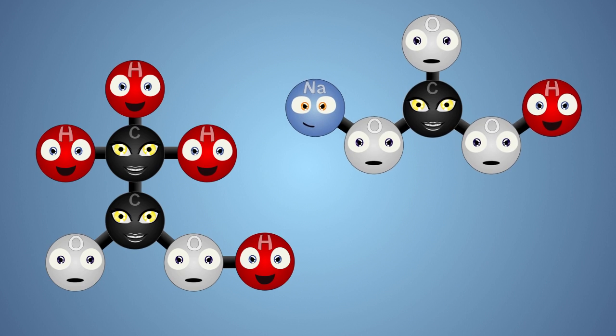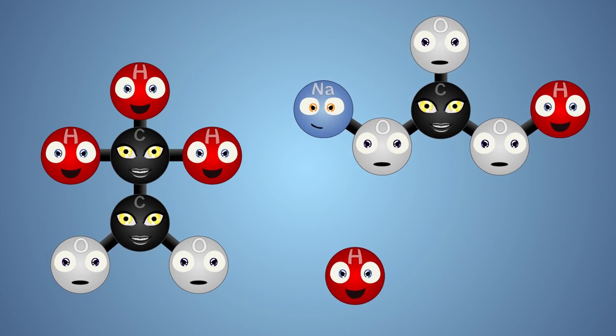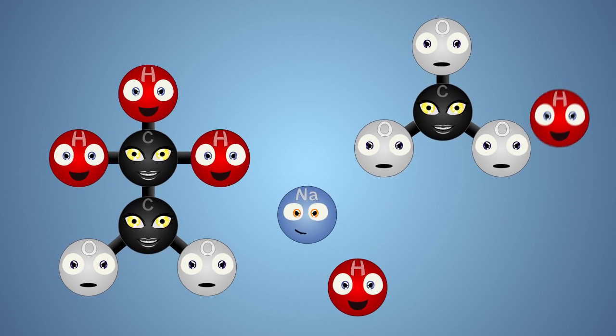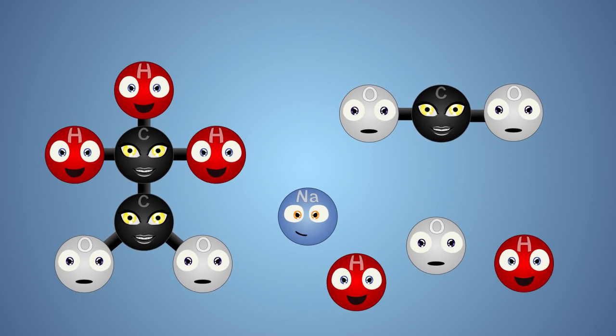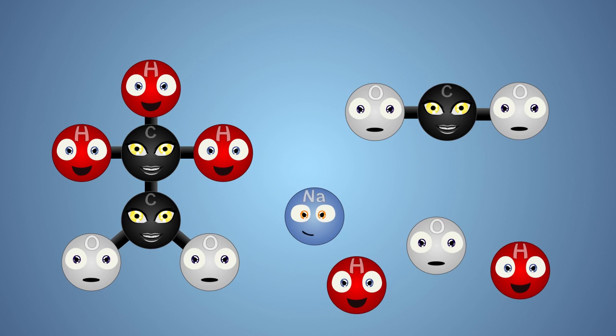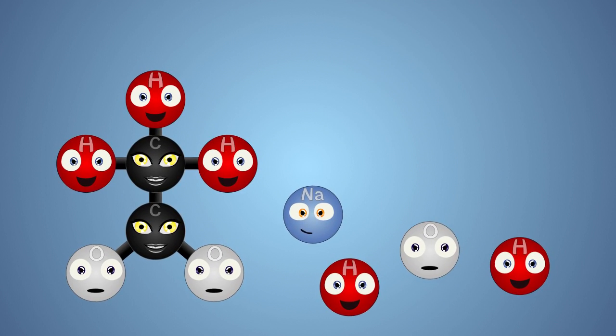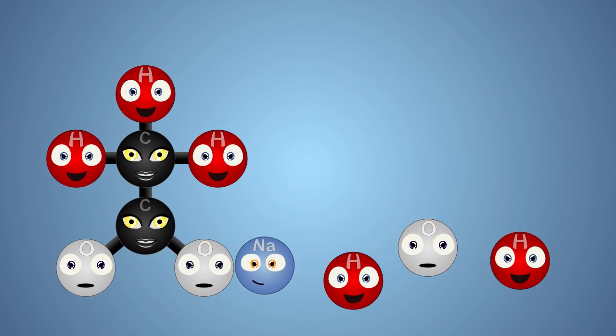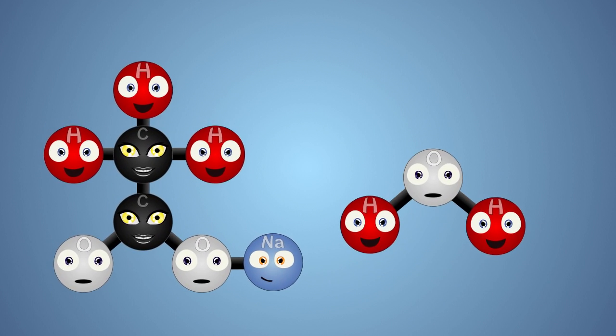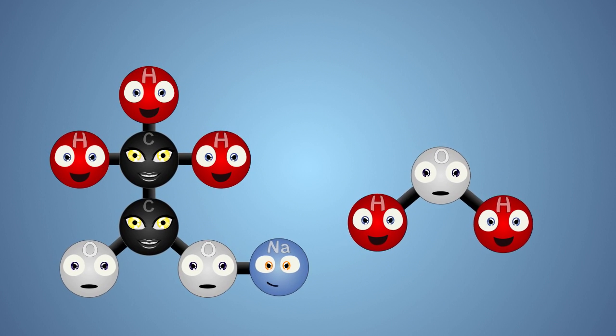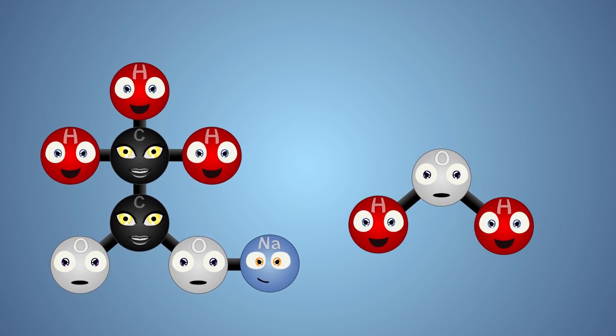When we mix baking soda into vinegar, the hydrogen breaks off the vinegar molecule, and the sodium, hydrogen, and one of the oxygen breaks free of the baking soda, leaving us with carbon dioxide gas which floats out of our solution as bubbles. The sodium attaches to what is left of our vinegar molecule to create sodium acetate. The leftover hydrogen and oxygen molecules attach together to create H2O which is water.